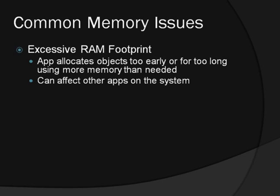Some of the most common memory issues encountered by developers include excessive RAM footprint, where an application allocates objects before they are needed, and maybe for longer than necessary. The overall memory footprint of the application can be much larger than necessary, and objects frequently make it to generation 2, where they often remain for a long time.